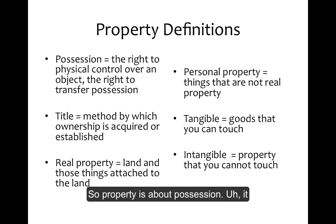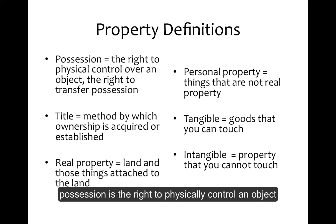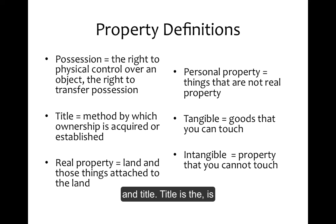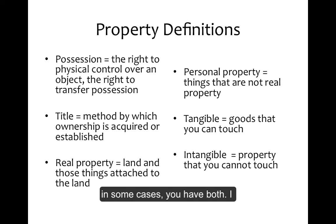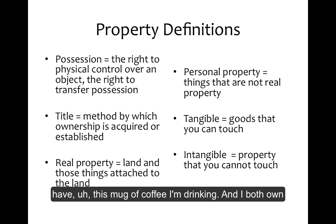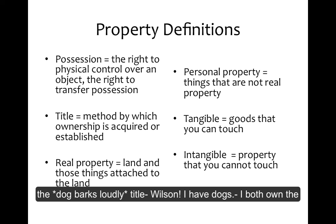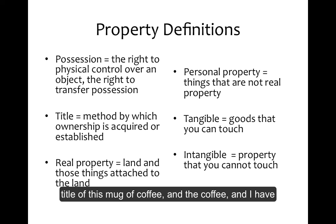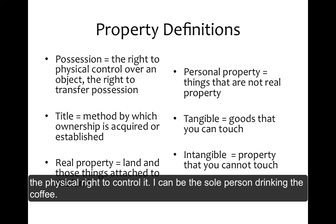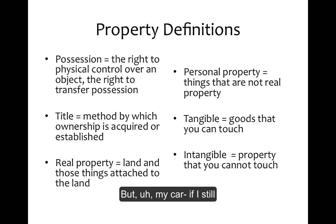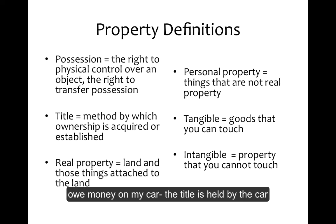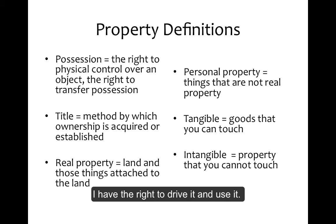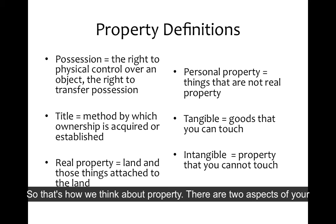Property is about possession. Possession is the right to physically control an object, and title is ownership of the object. In some cases you have both. I have this mug of coffee I'm drinking — I both own the title of this mug of coffee and the coffee, and I have the physical right to control it. I can be the sole person drinking the coffee. But my car, if I still owe money on my car, the title is held by the car company, although I have the right of possession — I have the right to drive it and use it. So that's how we think about property.